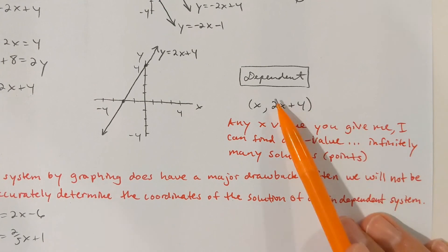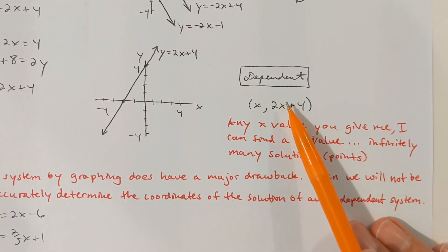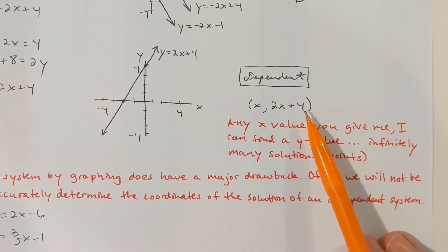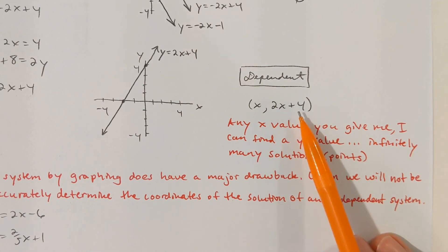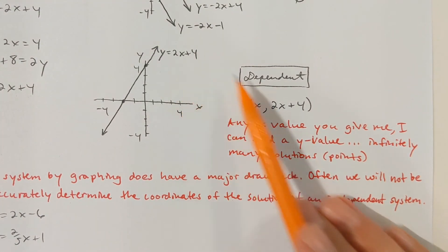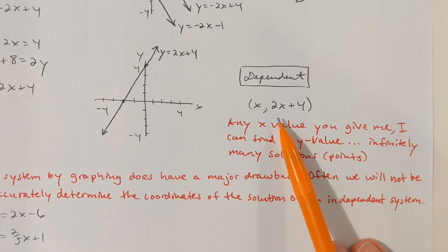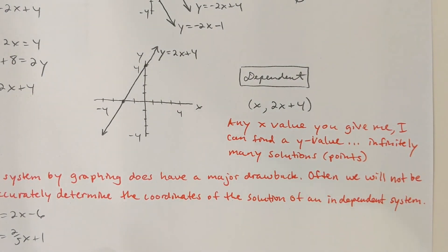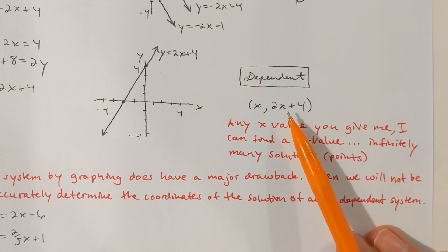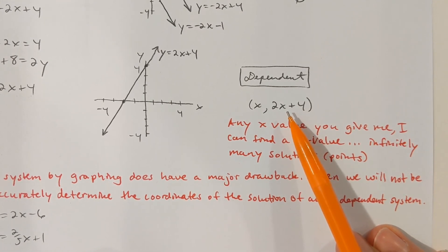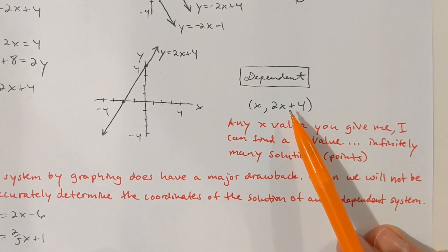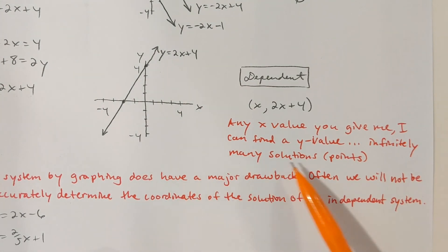To give our answer, I'll use an ordered pair form (x, y) with everything in terms of x. Where I see y, I know y is 2x plus 4, so I write 2x plus 4 in the y coordinate. This describes how there are infinitely many answers — any x value you give me, I can find a y value by taking 2 times that number and then adding 4. You can give me infinitely many values for x, generating infinitely many points on these two lines.